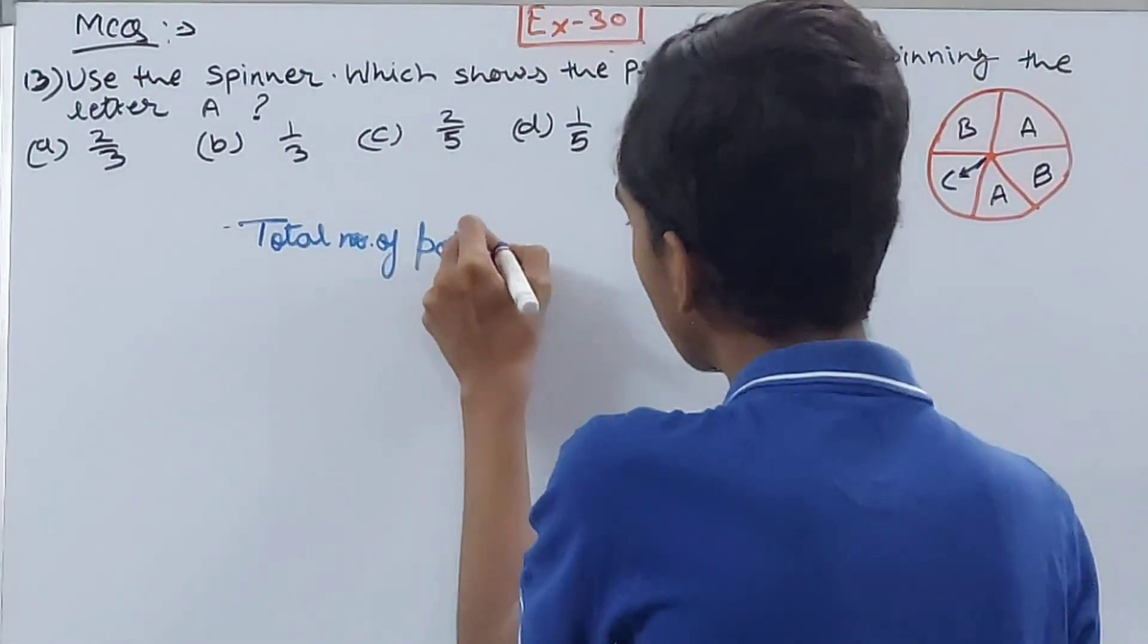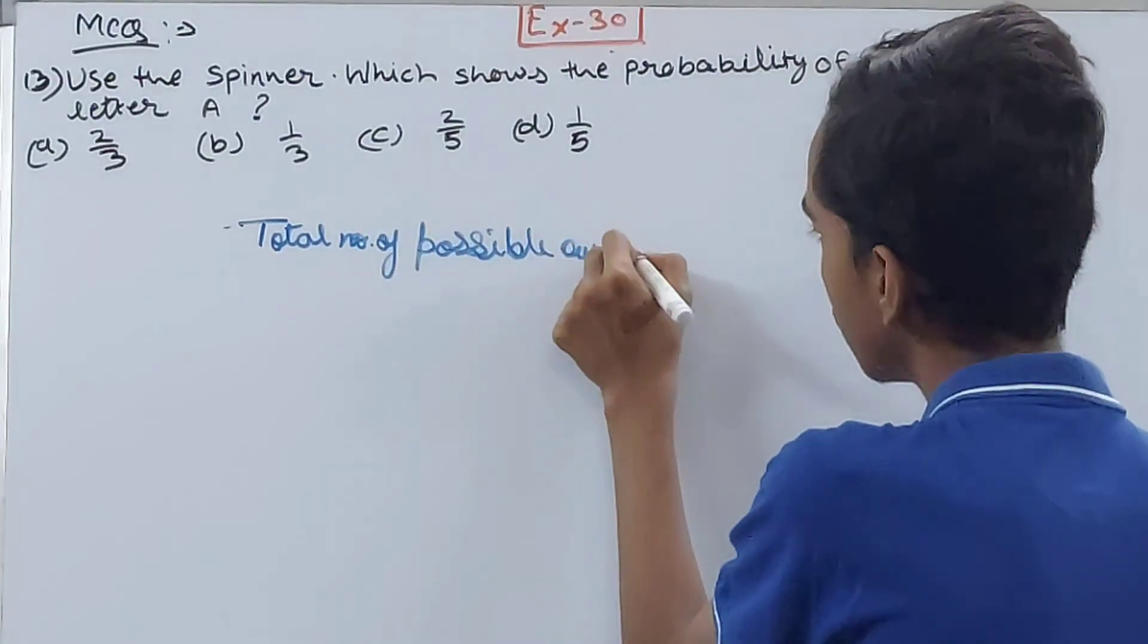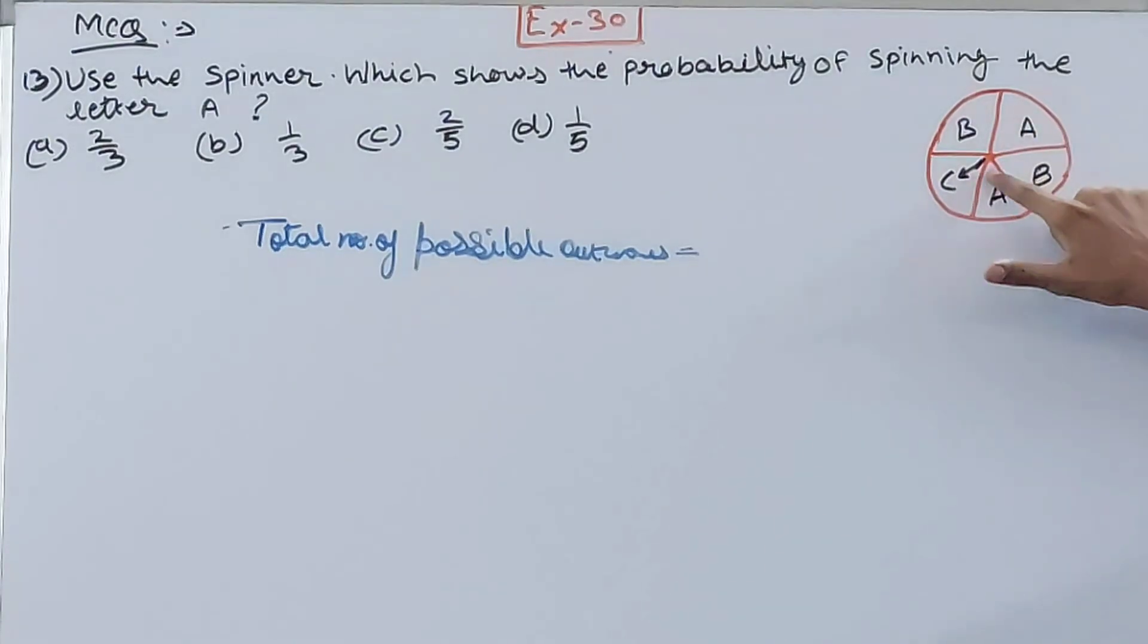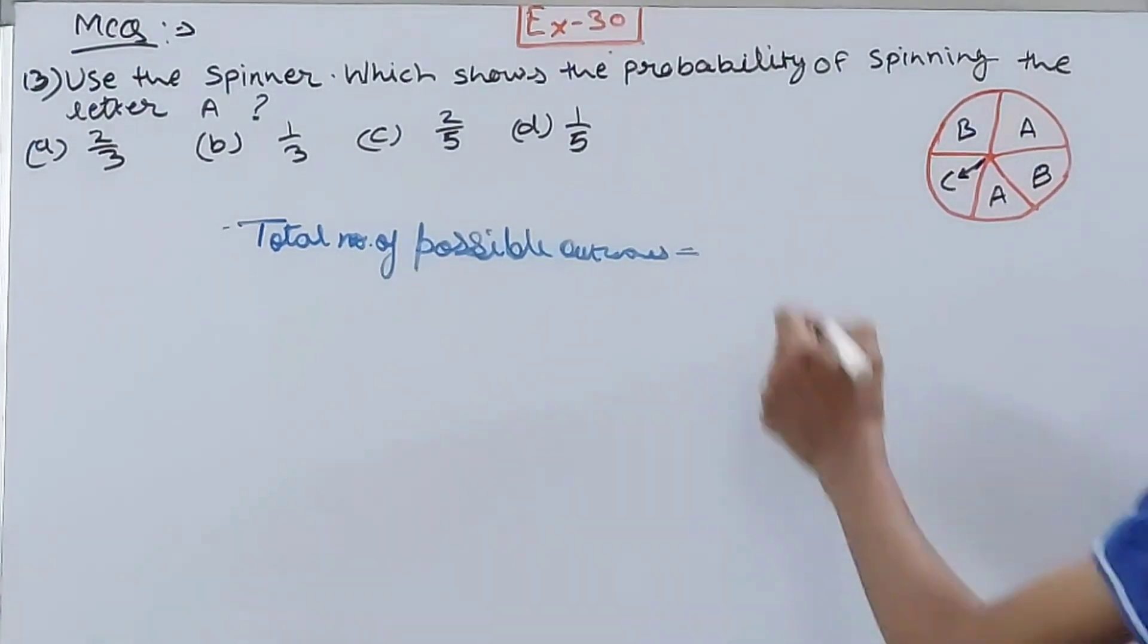How many outcomes are there that are possible? Fine. So you have one, two, three, four, and five. Yes.